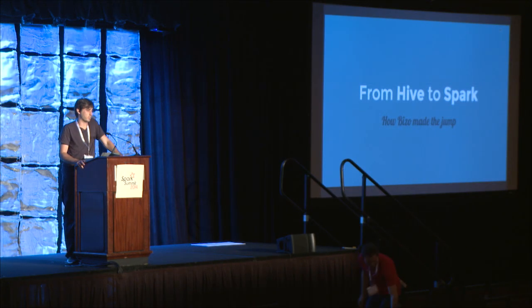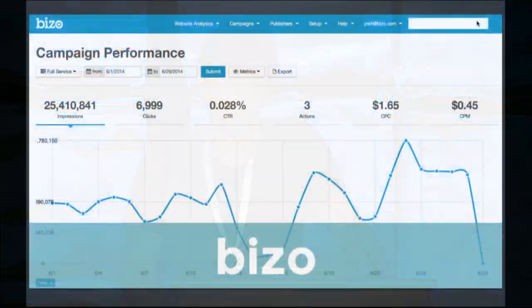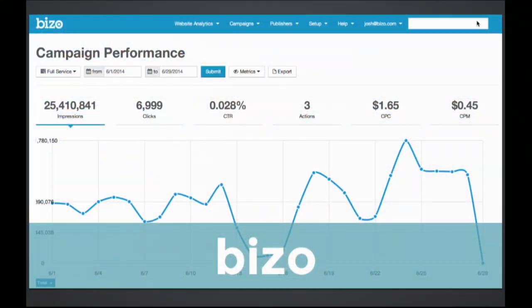I wanted to give a talk on how our company made a transition from Hive to Spark. Our company, Bizzo, is basically an ad tech company. We can help you get in front of the right audience — so if you want to reach people in finance or the medical industry, we can help you get in front of those types of people.